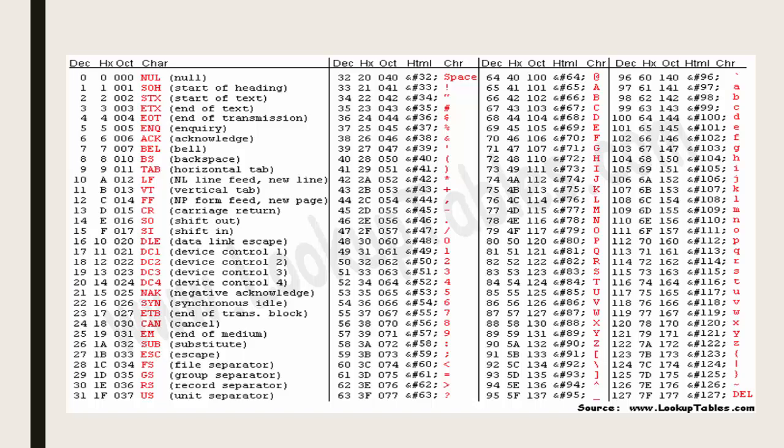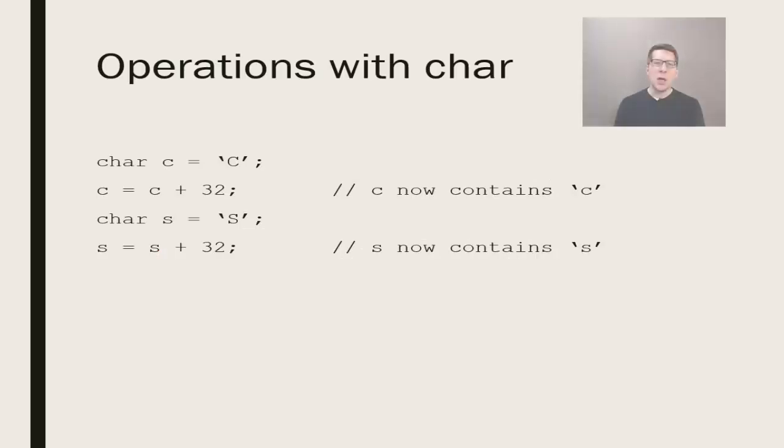Storing letters as numbers becomes interesting when you perform math operations on char types. You can, for instance, change all capital letters to lowercase simply by adding 32. We can demonstrate that by looking at the lines of code on this slide. We take two char variables holding the letters C and S respectively and then add 32 to each and print out the result.